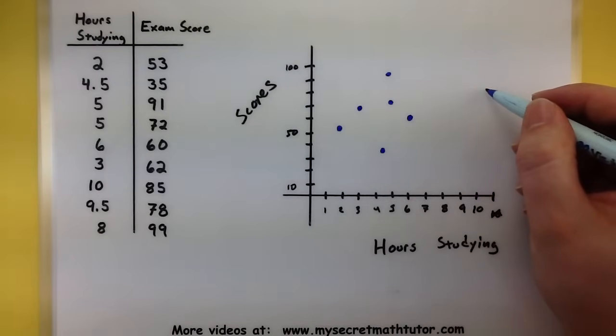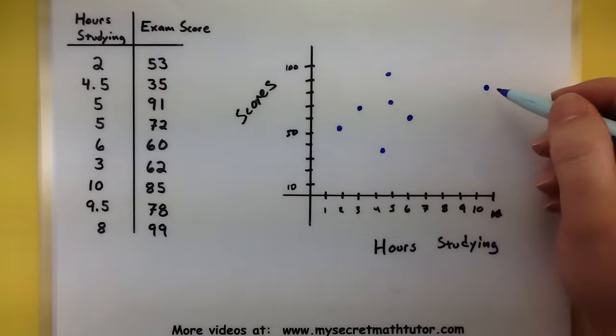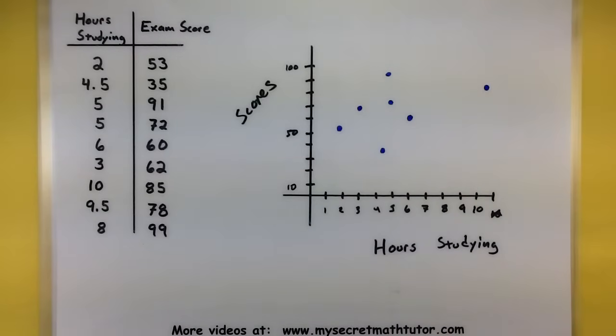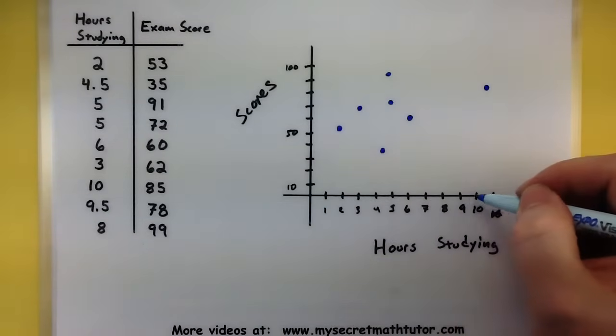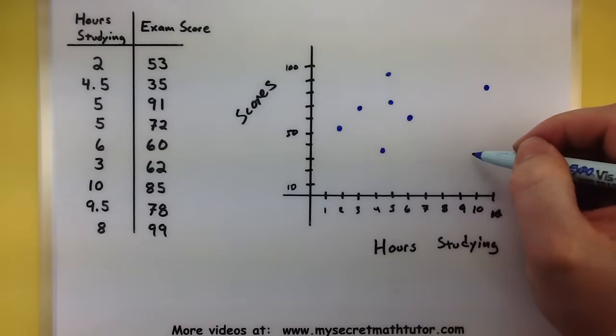There's 50, 60, 70, 80. Halfway. 85. Let's see. Nine and a half. So halfway between these two. This one's going up to 78.